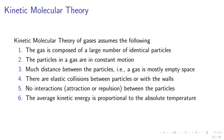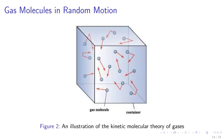Kinetic molecular theory. We consider the kinetic molecular theory of gases, which makes the following assumptions. 1. The gas is composed of a large number of identical particles. 2. The particles in the gas are in constant motion. 3. Much distance is between the particles. 4. There are elastic collisions between particles. 5. No interactions, attraction or repulsion, between the particles. 6. The average kinetic energy is proportional to absolute temperature. For example, in Figure 2 we may see an illustration of the kinetic molecular theory of gas. The density is rather low, and the particles are in constant motion, bouncing only with the walls of the chamber.